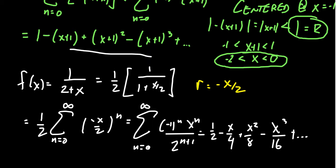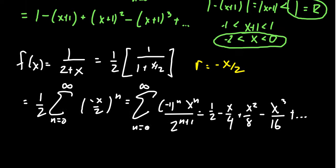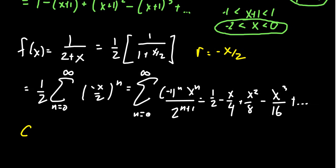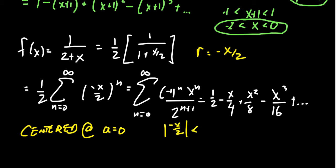We do get a different power series representation than before. With this approach, we're now centered at the origin, a = 0. That's one advantage — we prefer the simplicity of being centered at zero. When we investigate the constant ratio to find the radius of convergence, we take |(-x/2)| < 1, which means (1/2)|x| < 1, so the absolute value of x must be less than 2. This gives a radius of convergence of 2.